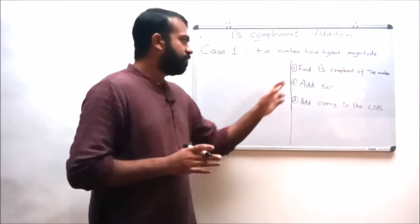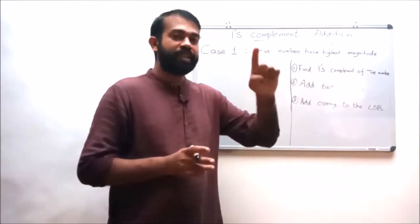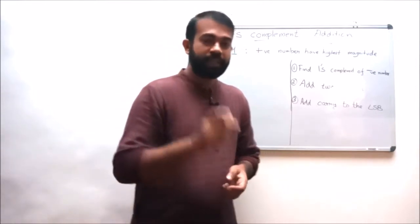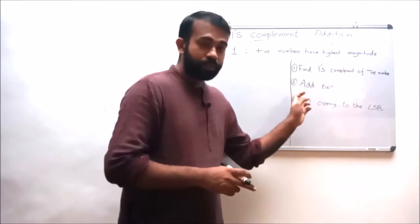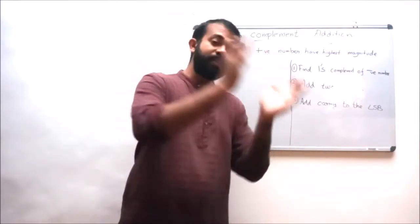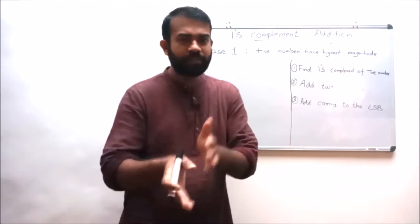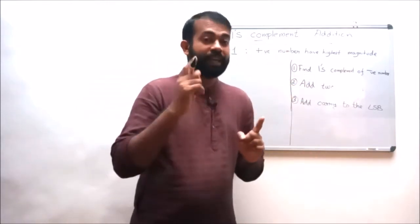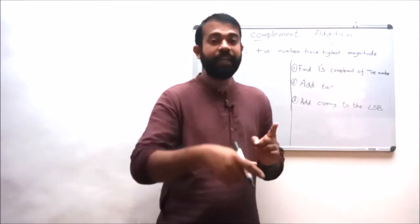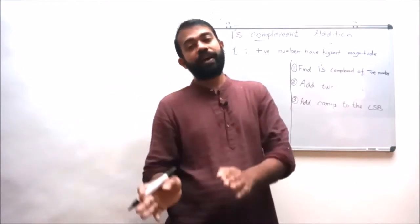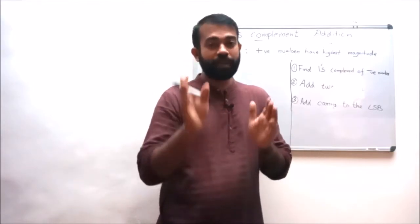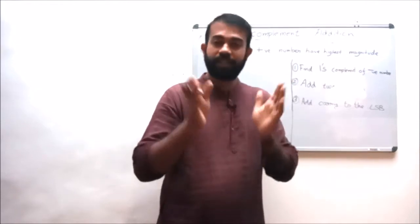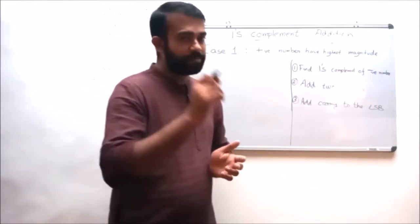Rule number one is: first of all, find the ones complement of the negative number. Rule number two is: add that ones complement with the positive number. And the third rule is: there will arise a round-around carry. This carry should be added to the final result at the LSB position, and the result will be the final equivalent result. Let us consider some examples.